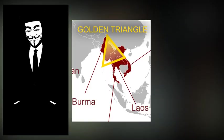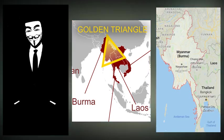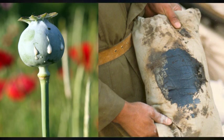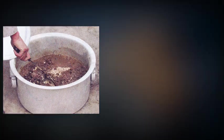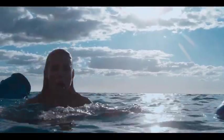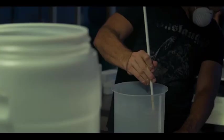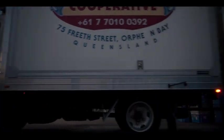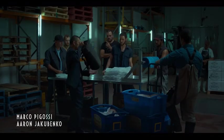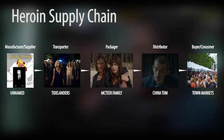The heroin supply chain in Orflin Bay starts with mysterious suppliers possibly based in Afghanistan, but most likely headquartered in the Golden Triangle — specifically Myanmar. They take air-dried poppy seed resin, add calcium hydroxide and other chemicals to transform it into brown morphine, then dry it further and add more chemicals to make white heroin blocks. These blocks are shipped in barrels, dumped in the Coral Sea, and picked up by the Tidelanders. The barrels are delivered to the McTeer operation, who powderize the blocks, mix them with water, and create packaged ice cubes used to cover raw fish for market sales. They take the fish and heroin ice cubes to their distributor, China Tom, who sells them in the streets of Brisbane and nearby towns.